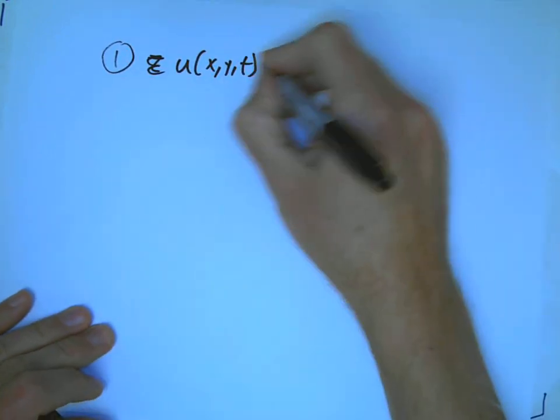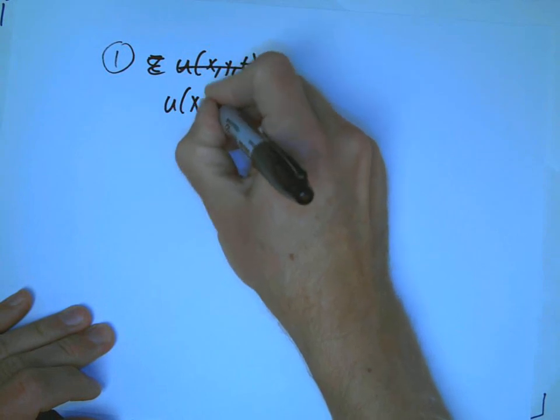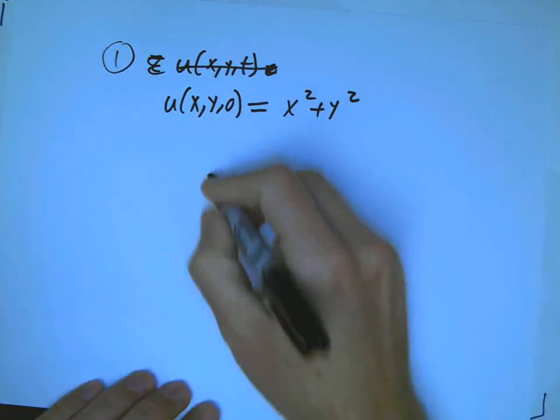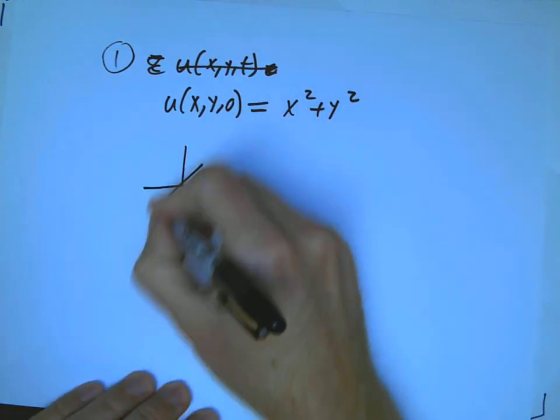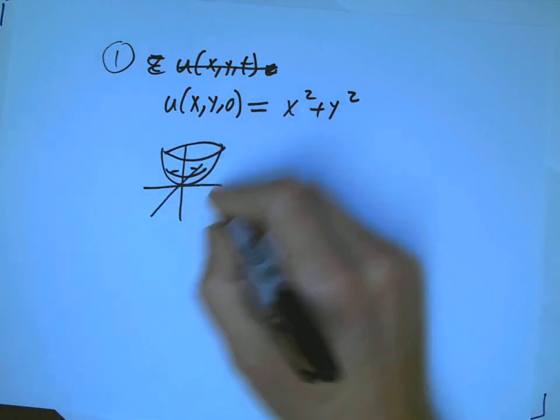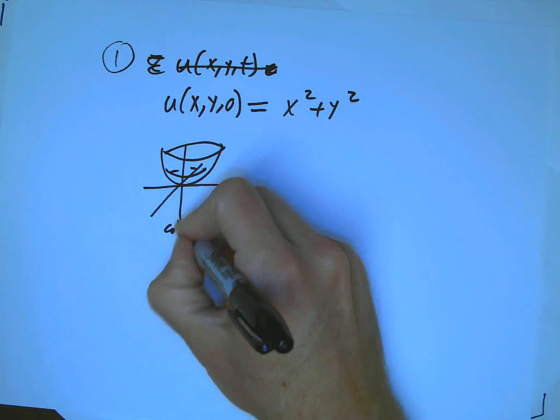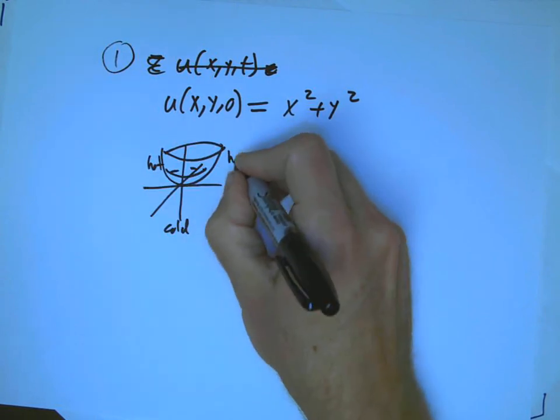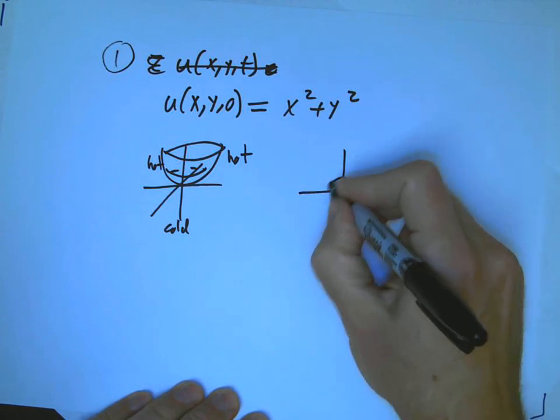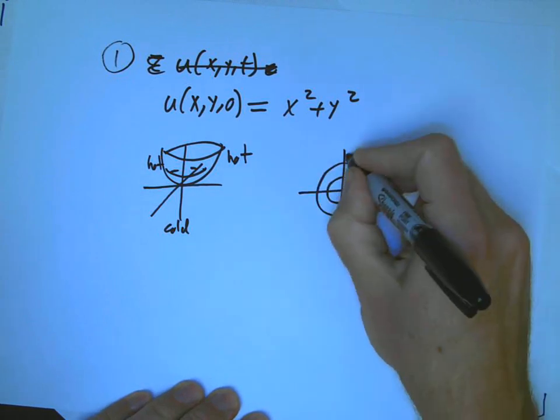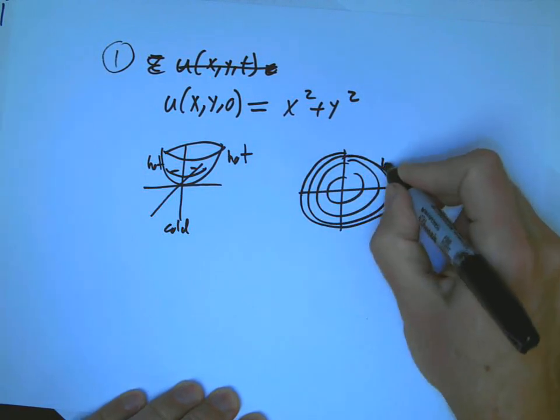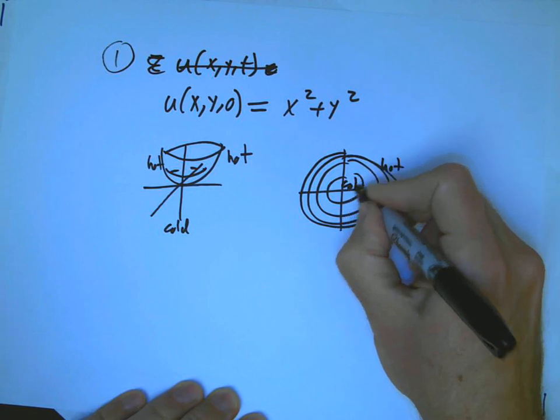At time zero, let's say it's a bowl: u(x,y,0) = x² + y². So that's cold in the middle and hot out here at the edges. If you want the contour plot, it looks like this. And it's hot out here and cold in the middle.